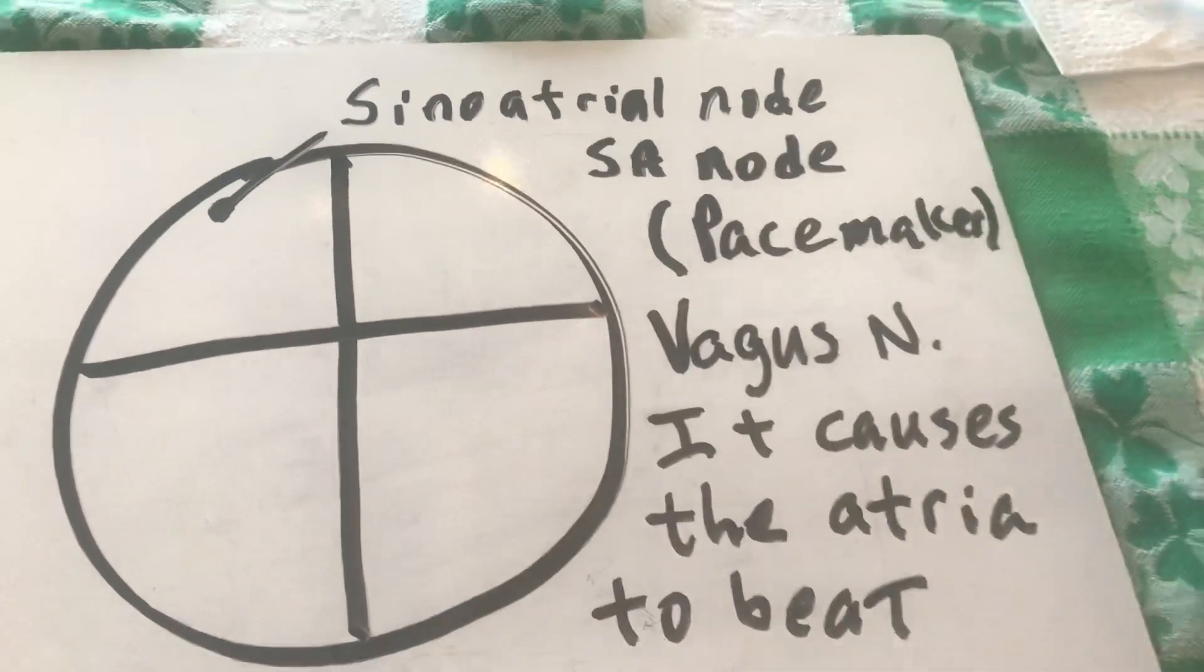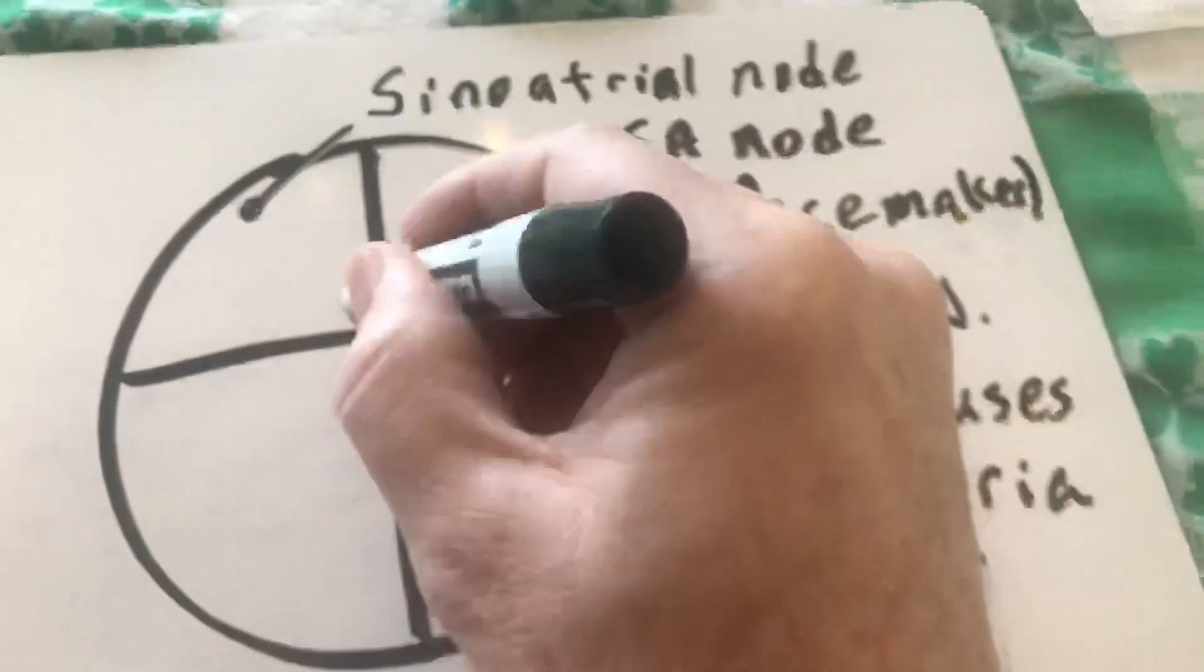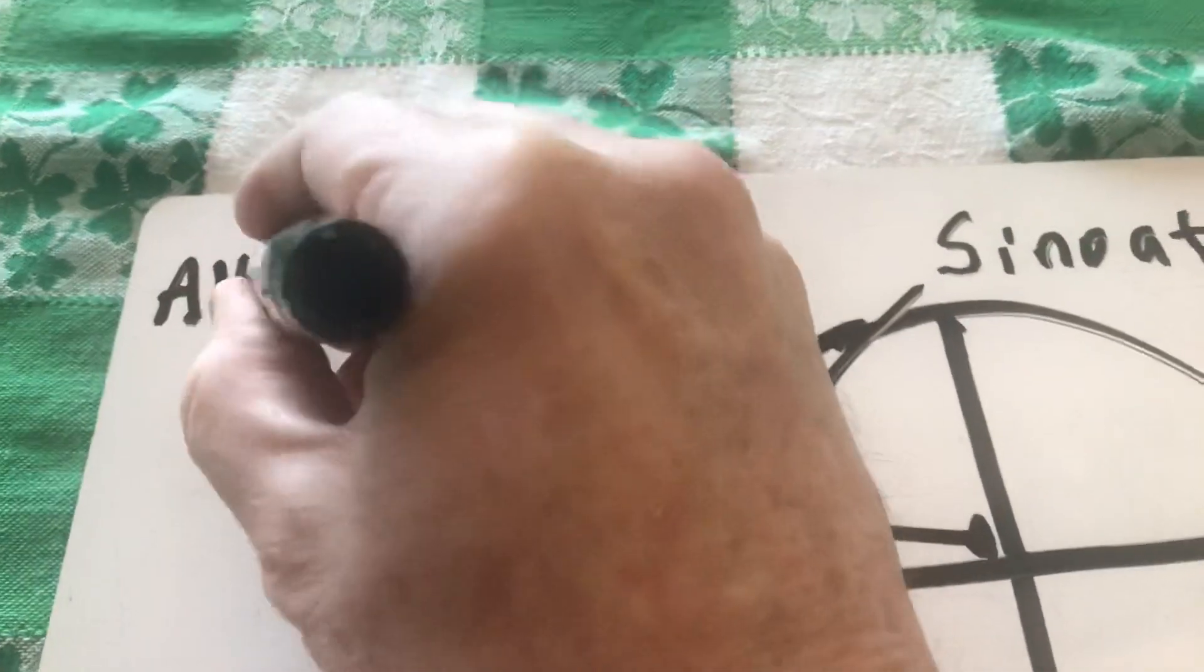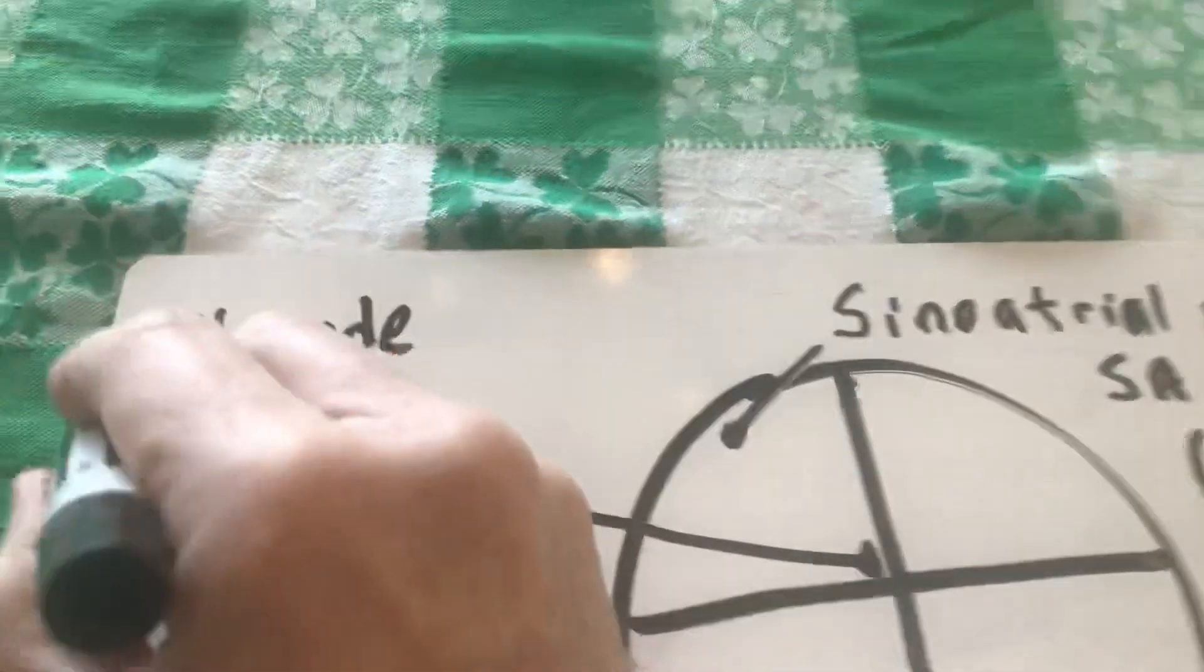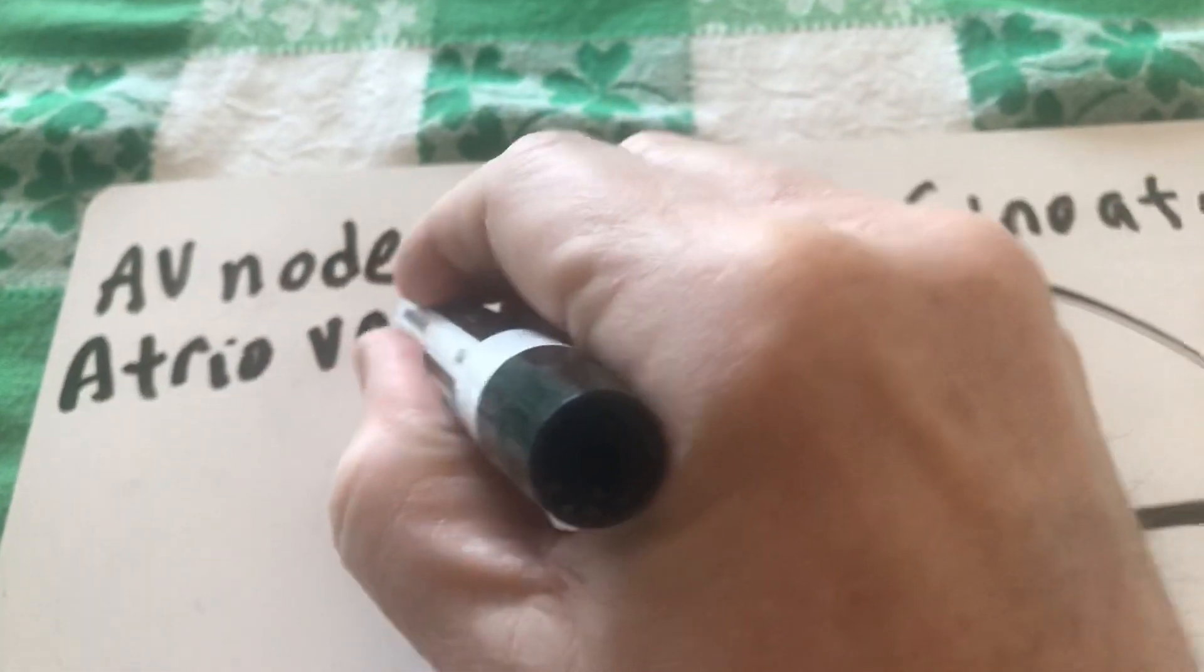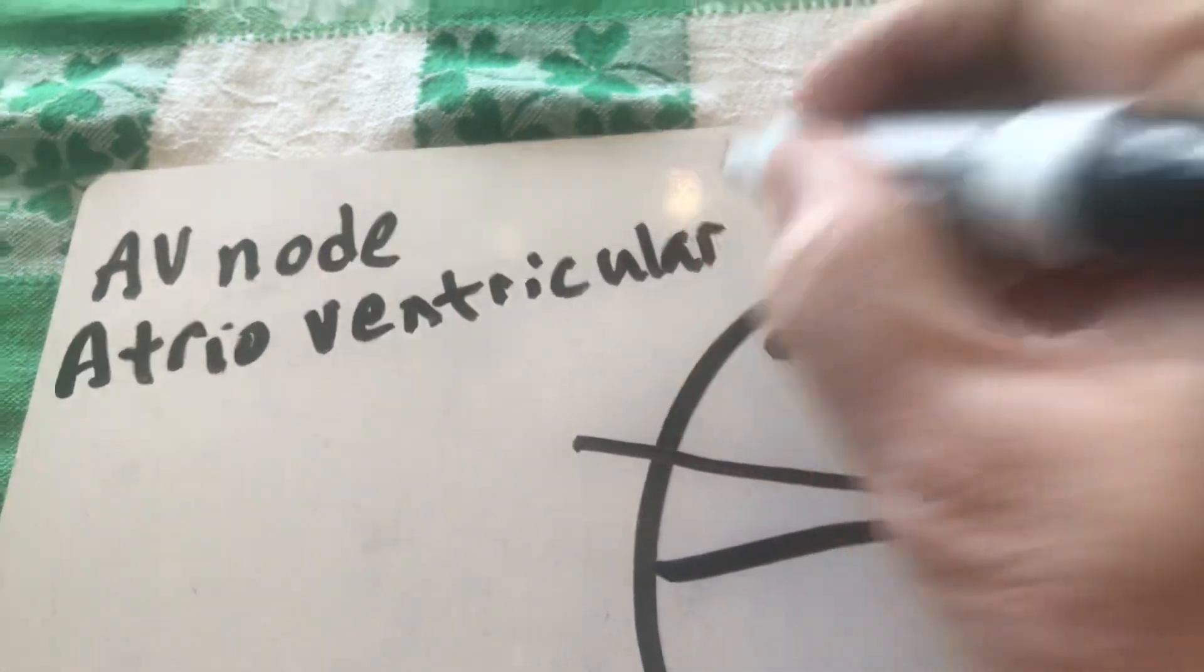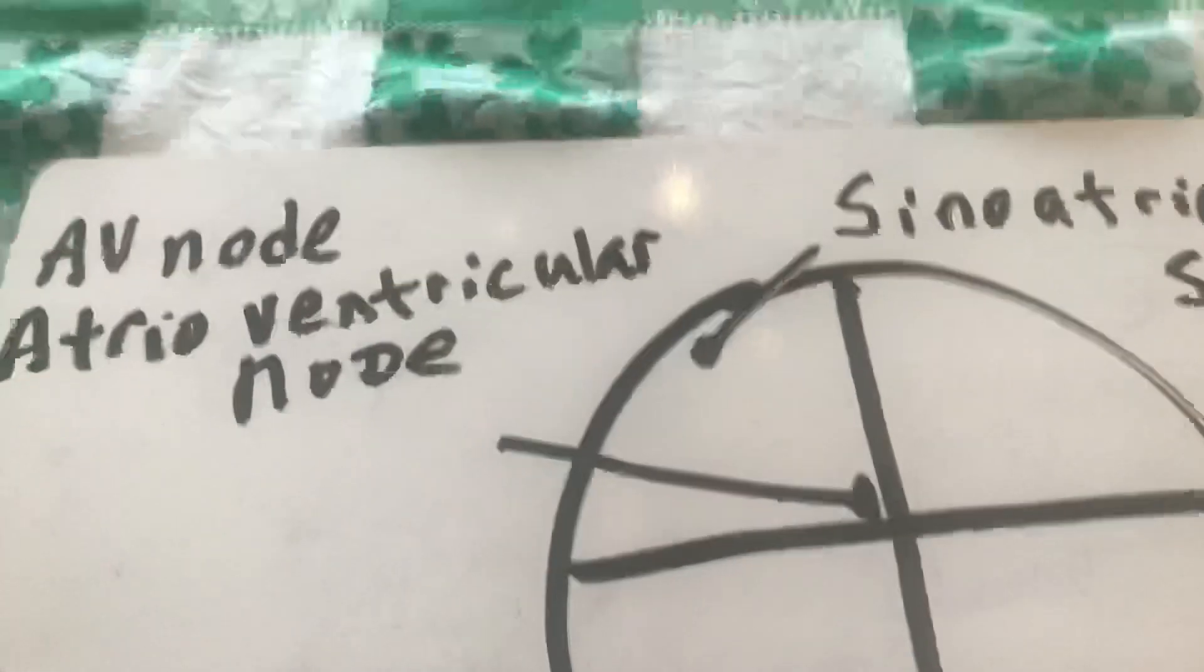Now the other thing that happens is right down in here we have something called the AV node. Also known as the atrioventricular node.